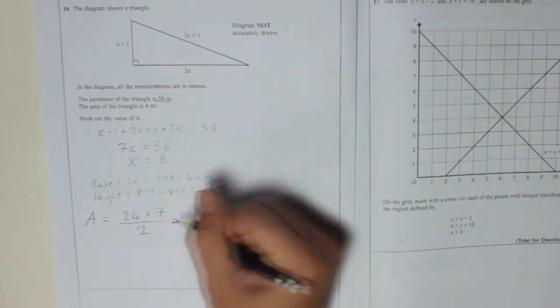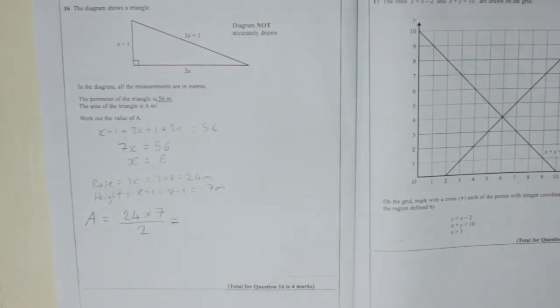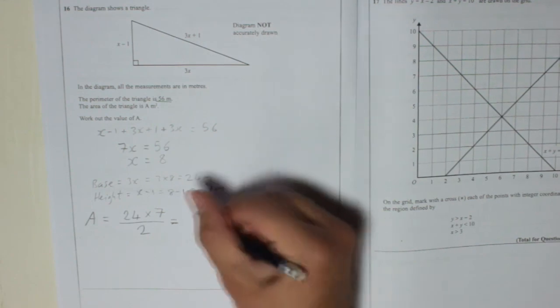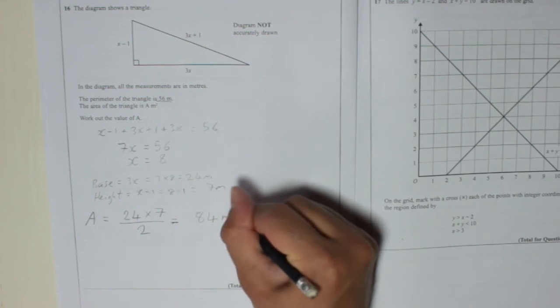And that is, I'm going to do 12 times 7 because that does the same thing, so 10 times 7 is 70, add 2 more 7s, that's 84 metres squared.